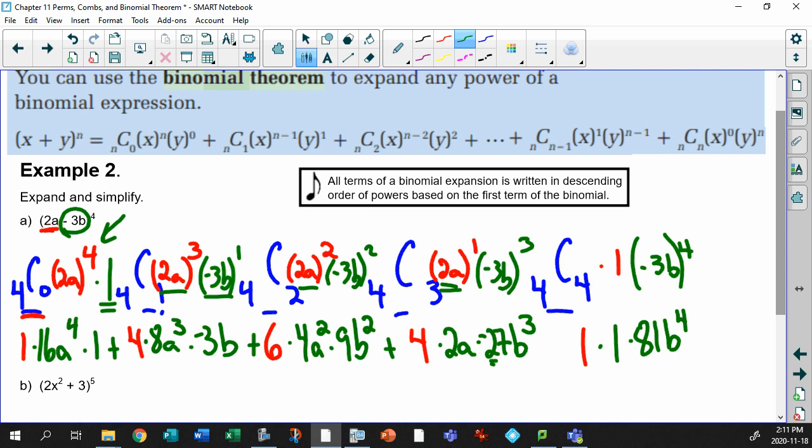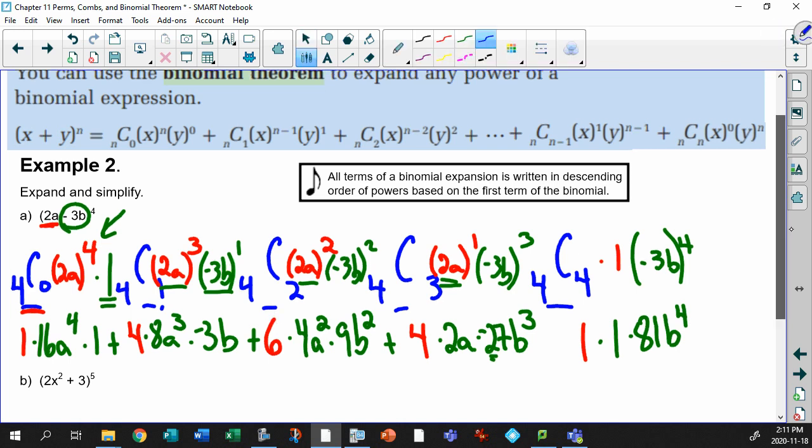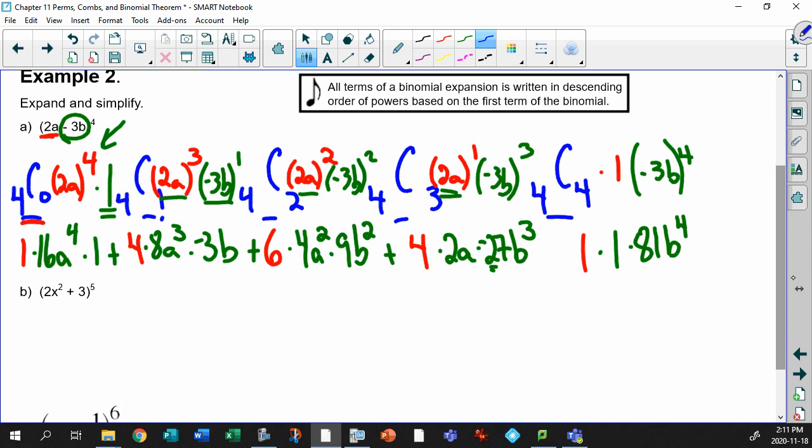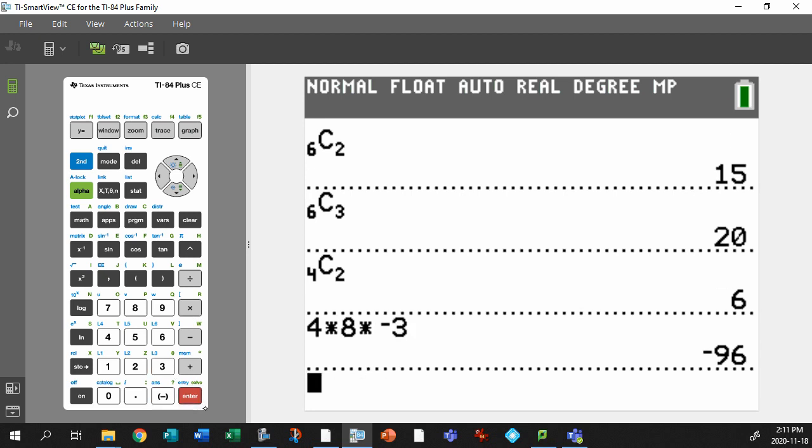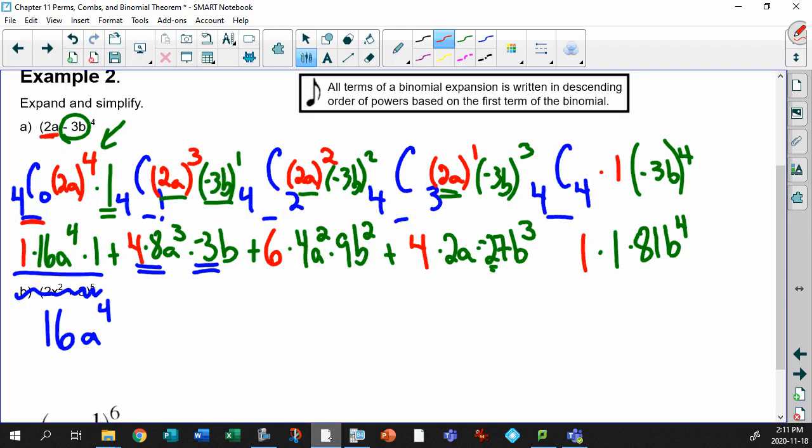I'm running into the second question here already, so I'm just going to clean this up. Let's look at this one. 1 times 16 times 1, that's easy, that's 16a to the 4. This might be a little bit. 4 times 8 times minus 3. Just bring up the calculator. 4 times 8 times minus 3, minus 96.